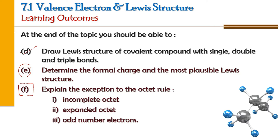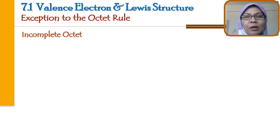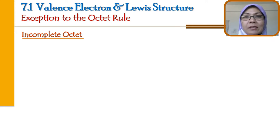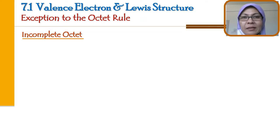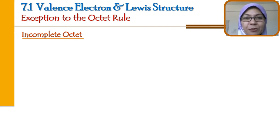This one we have done previously in 7.1.2. First: incomplete octet. Previously, you have learned that all atoms will try to achieve stability — in other words, they will try to achieve octet. The octet rule states that an atom will either transfer or share electrons to achieve stability. However, sometimes we will come across certain molecules that do not obey the octet rule. These are a few examples of the exception to the octet rule. First: incomplete octet.